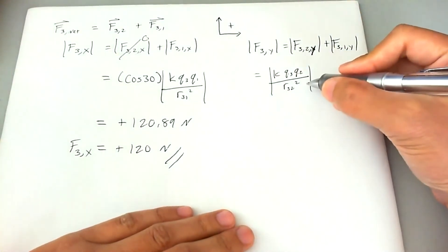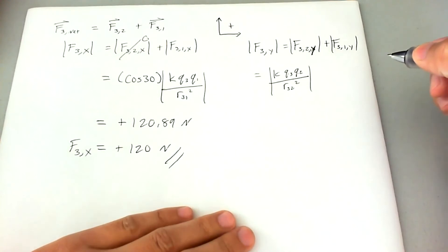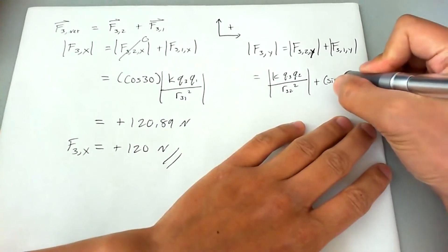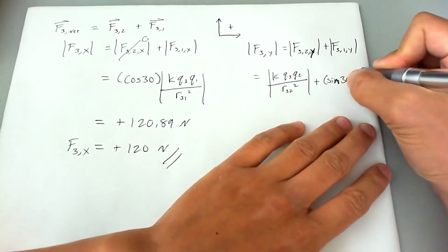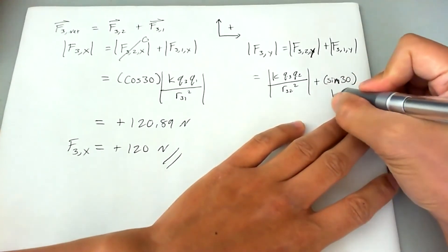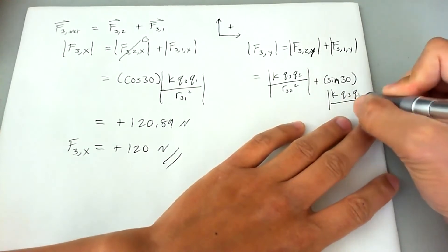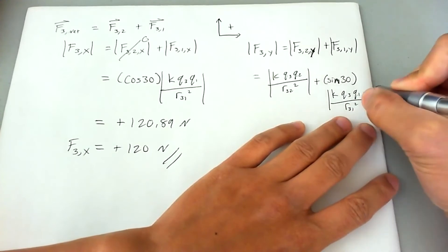We're going to go ahead and put this there so we have complete control over the signage. And then we're going to go ahead and say sine 30 times k q3 q1 over r31 squared.